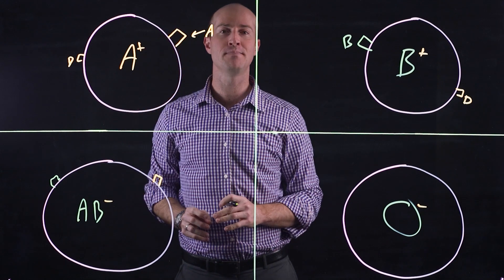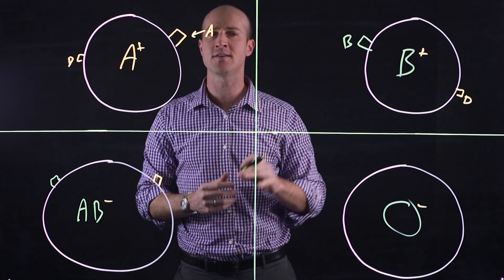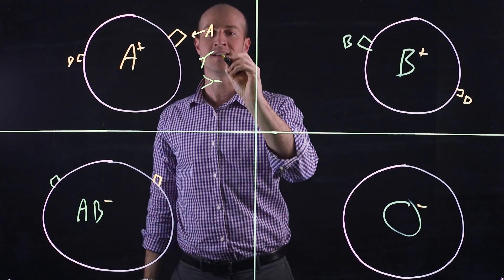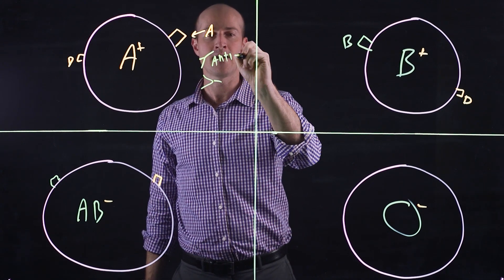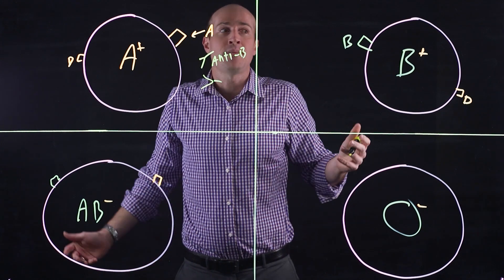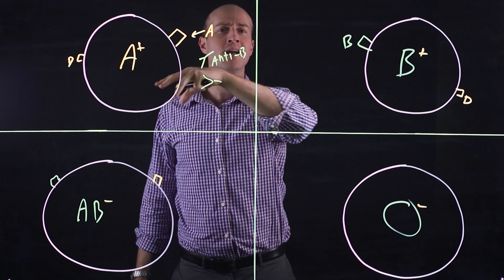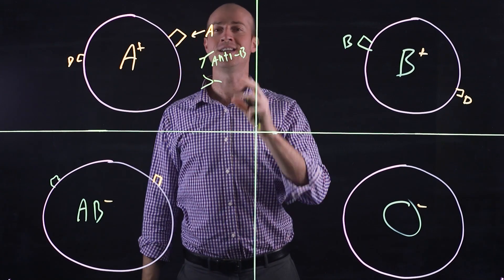If you're an A blood type, in your plasma, the part that surrounds the red blood cells, you actually develop what's called antibodies against B. Why? We don't know, you just do. It's something back in the day, maybe there was a bacteria that looked like B so A blood type wanted to fight it. We're not sure, it just is.